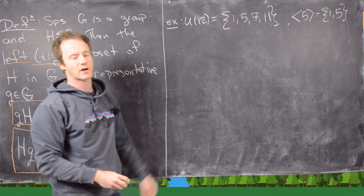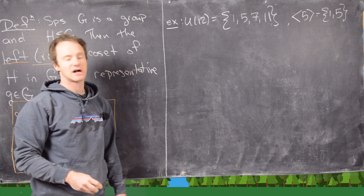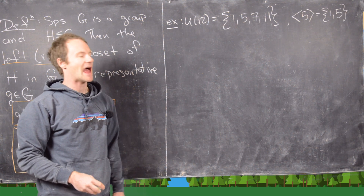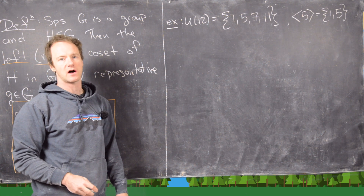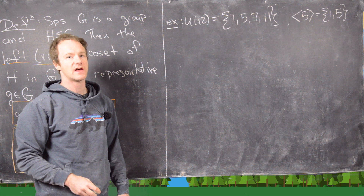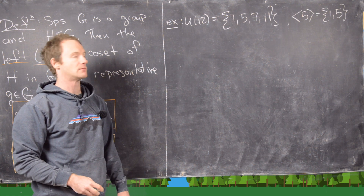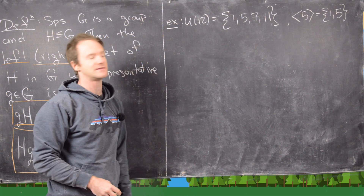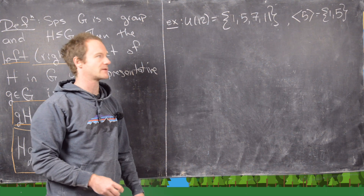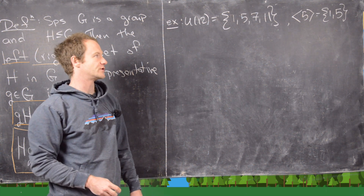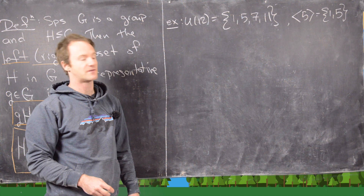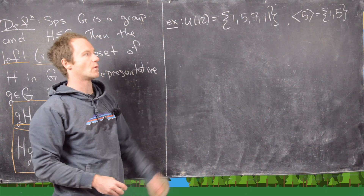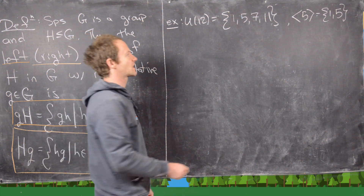For our next example, we look at U12, the group of units modulo 12 — everything between 1 and 12 that's relatively prime to 12 under multiplication modulo 12. That leaves us with {1, 5, 7, 11}. We take the cyclic subgroup generated by 5, which gives just {1, 5}, because 5²=25=1 mod 12.